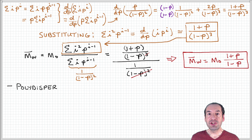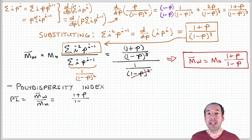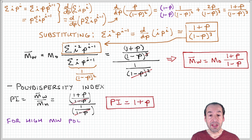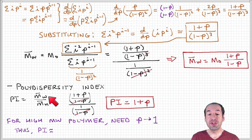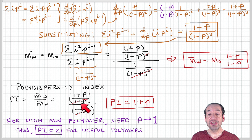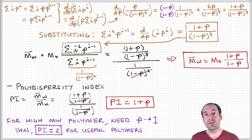Now that we have expressions for both the number and weight average molecular weight, we can calculate the polydispersity index for step growth polymerization. The polydispersity index is the ratio of the weight average to the number average molecular weight. Substituting our expressions, we find that the polydispersity index equals 1 plus the extent of reaction p.